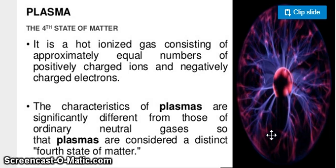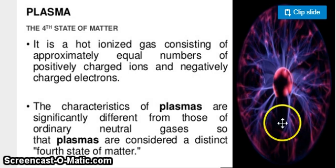It is a hot ionized gas consisting of approximately equal numbers of positively charged ions and negatively charged electrons. The characteristics of Plasma are significantly different from those of ordinary neutral gases, so that Plasma is considered a distinct fourth state of matter.